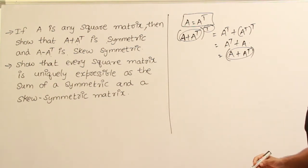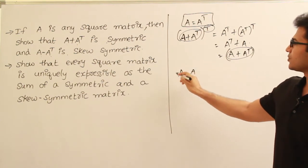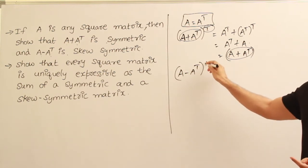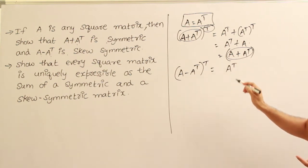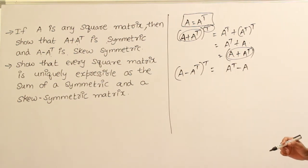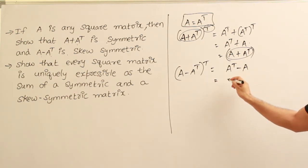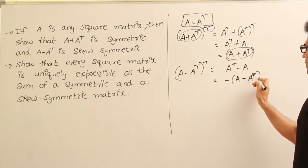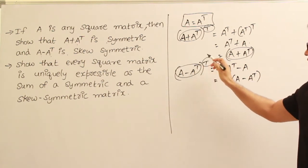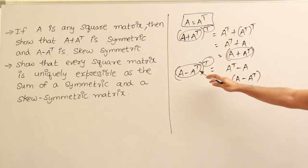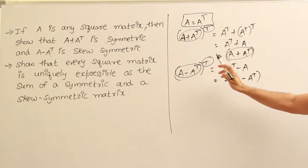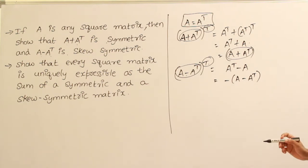Now let us look at A minus A transpose. To check if it is skew symmetric, we find the transpose of it. That gives us A transpose minus A, which we can write as minus of A minus A transpose. We have taken a matrix and found its transpose, and got the negation of the same matrix. So we can say the original matrix is skew symmetric.